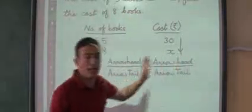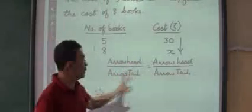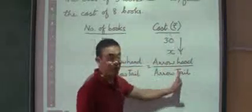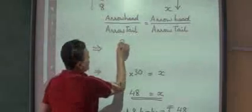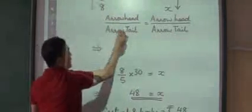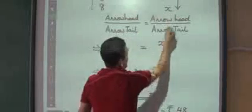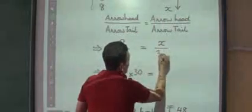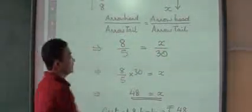Now using these arrow head and arrow tail, we come to the conclusion that arrow head upon the arrow tail of the first column will be equal to the arrow head upon the arrow tail of the second column. So coming to that — arrow head of the first column is 8, arrow tail of the first column is 5. This will be equal to: arrow head of the second column is x and arrow tail of the second column is 30.